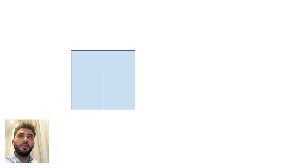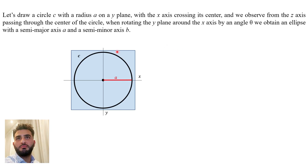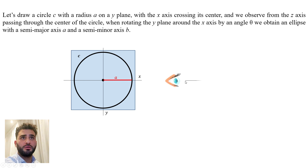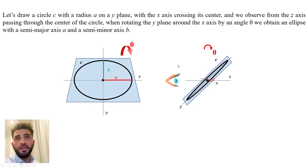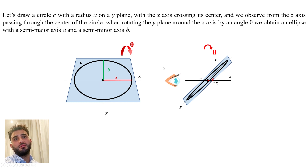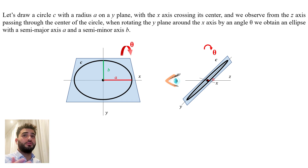So let's put things back in context. Basically here's what happened: I was doing my demonstration and at a certain point, at the beginning, I said let's draw a circle C with a radius A on a y-plane, with the x-axis crossing the center of the circle, and if we observe the circle from a z-axis passing through the center of the circle, and we rotate the y-plane with an angle theta, I stated that we obtain an ellipse with a semi-major axis A and a semi-minor axis B. Some of you told me that this must be proven — that rotating a circle becomes an ellipse — and this is exactly what I'm going to demonstrate in this video.